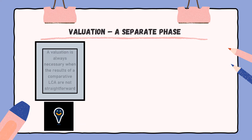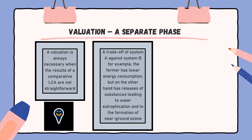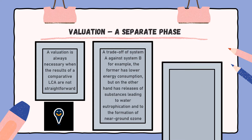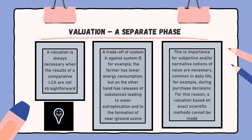Evaluation/valuation as a separate phase: a special status is attached to the former component valuation, which has not been assigned in the standardized structure. Evaluation is always necessary when the results of a comparative LCA are not straightforward — a trade-off of system against system needs to be made, for example when the former has lower energy consumption but has releases of substances leading to water eutrophication and formation of near-ground ozone. For these decisions, subjective and normative notions of value are necessary. Exact scientific methods cannot be applied, so SETAC proposed introducing valuation as a component of its own. This proposition was seized by UBA Berlin and by DIN NAG US.